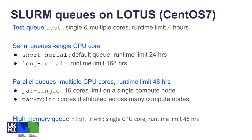For the Slurm queues, we have preserved the naming of the queues to make the transition easier. We have the same six standard queues on Slurm with the same naming, starting with the test queue. Note that Slurm uses the term 'partition' - partition and queue mean the same thing, it's just Slurm's own terminology. The runtime limits are the same: nothing has changed - one day (24 hours) for short serial, seven days for long serial, and the parallel queue with 48 hours as maximum runtime.